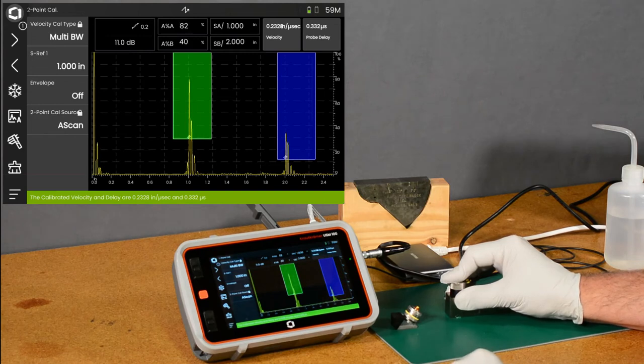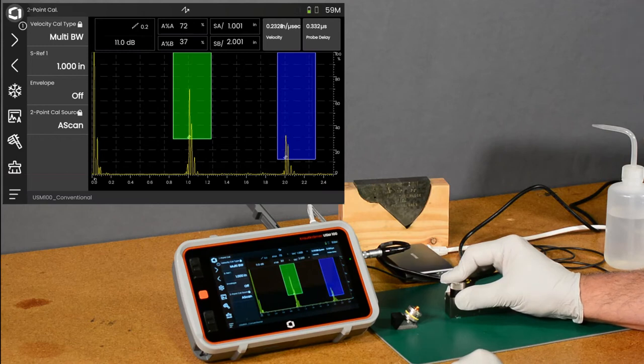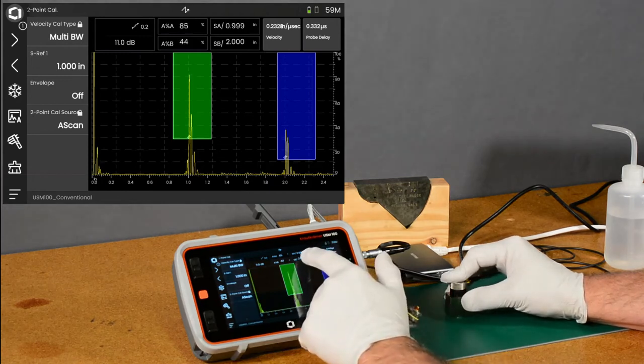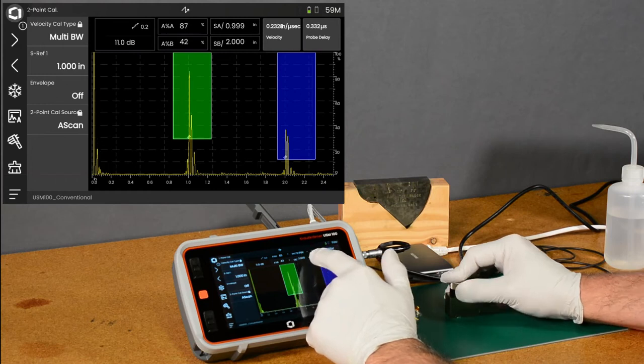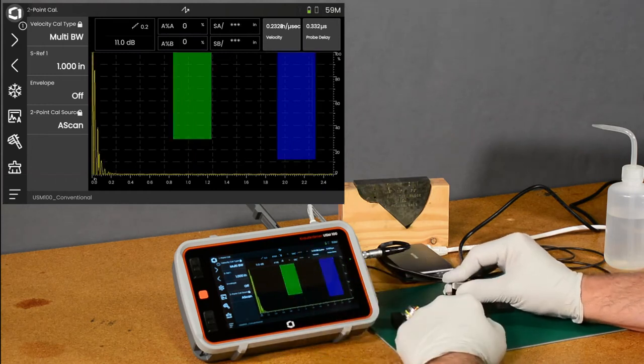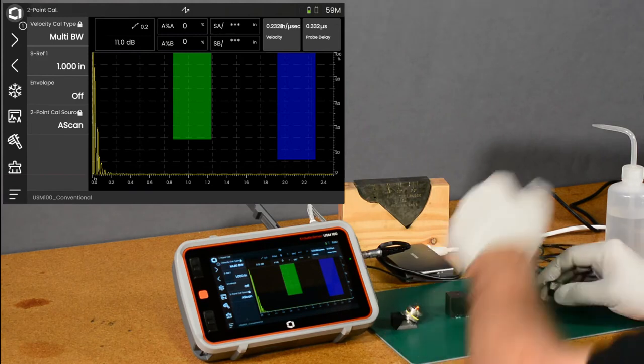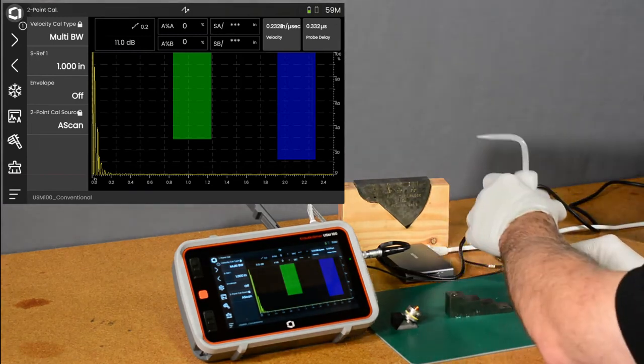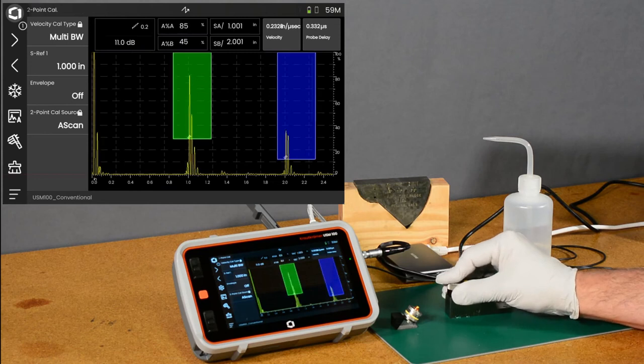And it looks like we measured 0.2328 inches per microsecond of velocity, and 0.332 microseconds of delay. Notice our reading up here for sound path and gate A is rated at an inch, 0.999. Get a little more coupling on here.